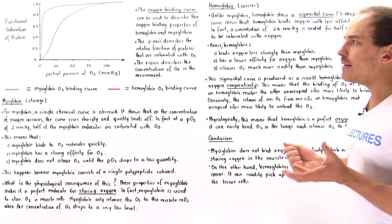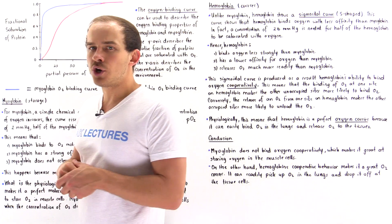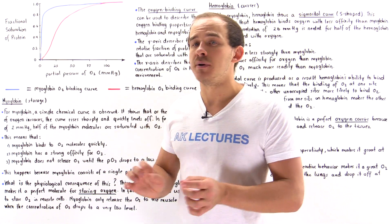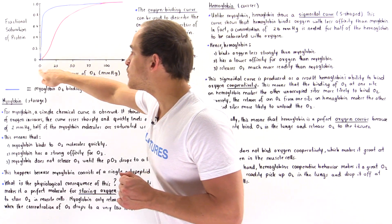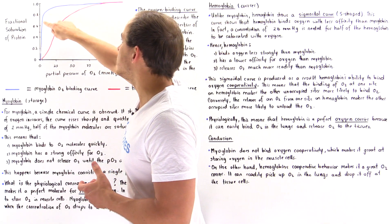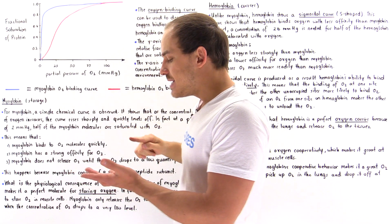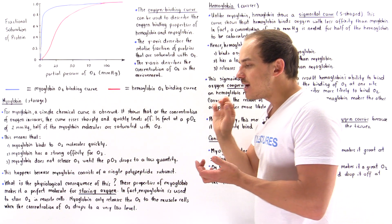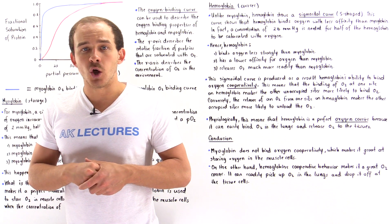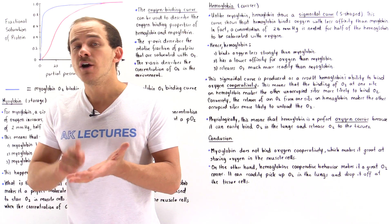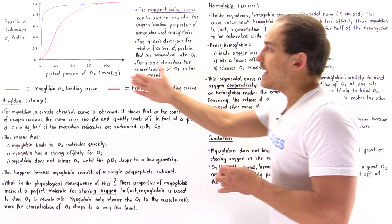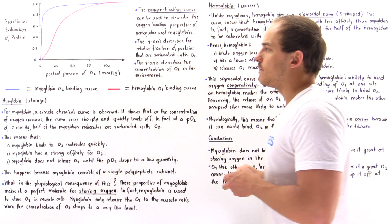Let's begin by describing what the meaning of these two curves are, starting with the blue curve for myoglobin. For myoglobin, we have a simple hyperbolic binding curve. As we begin to increase the concentration ever so slightly, there's a sharp increase in that curve until it levels off and becomes flat. This means that as soon as we add a tiny amount of oxygen, all that oxygen begins to bind onto the myoglobin because myoglobin has a very high affinity for oxygen — it binds oxygen strongly.